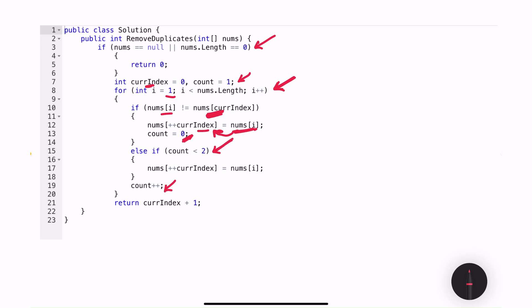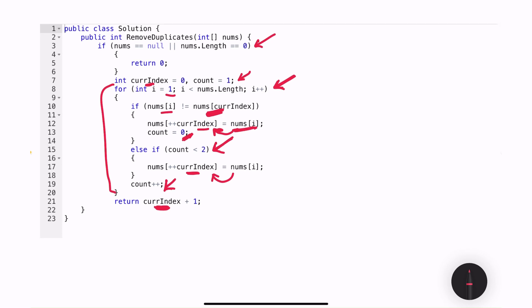And then I am resetting this count over here and then later on incrementing it to 1. If the count is less than 2, then I am just moving or rotating the value at index i to index current index plus 1. And then after this if and else if conditions are done, I am incrementing my count. After the iteration is done, this current index will be pointing at the index that was last updated. Because we have to return the number of values, I am just adding 1 to it and returning it.